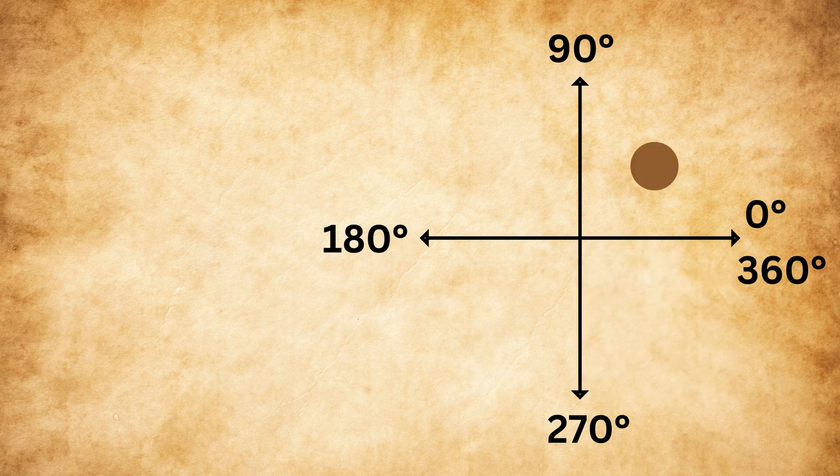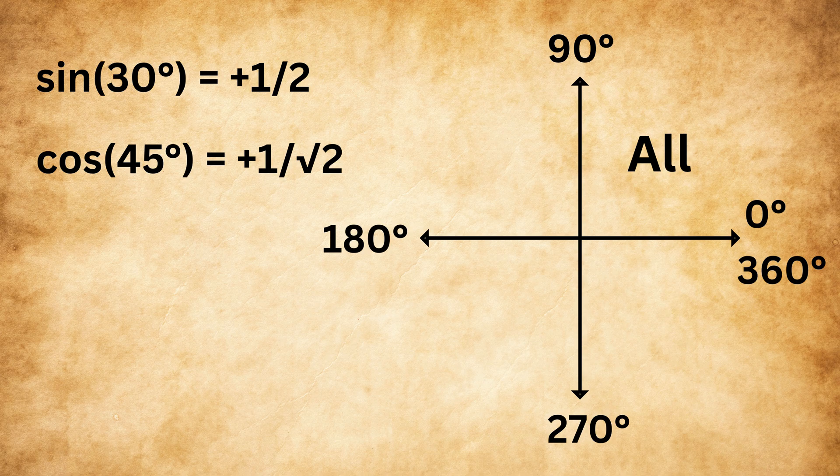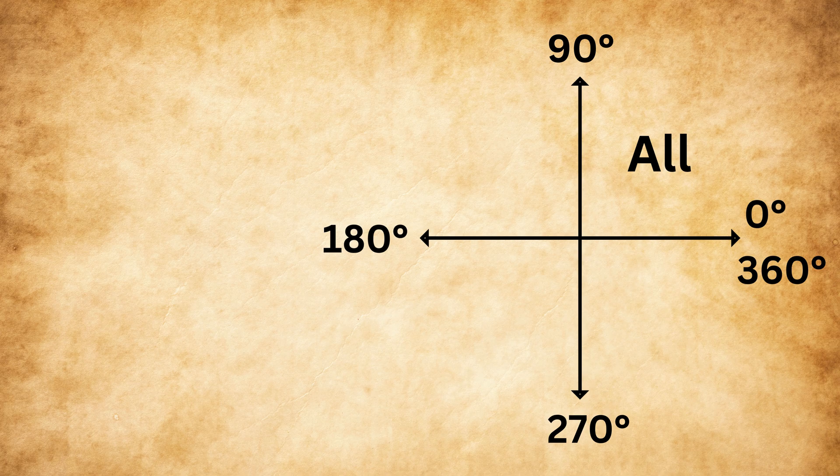In the first quadrant, that is from 0 to 90 degrees, all trigonometric ratios are positive. For example, sine 30 is plus 1 upon 2, cosine 45 is plus 1 upon root 2, and tan 45 is plus 1. So in the first quadrant, everything is positive.